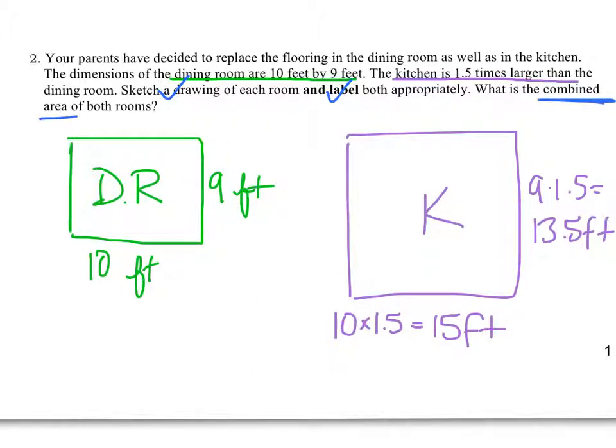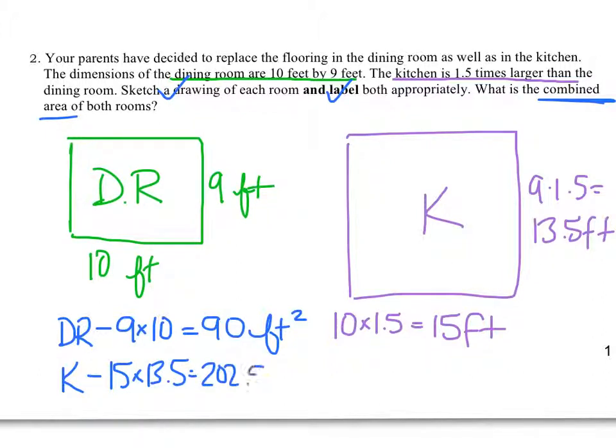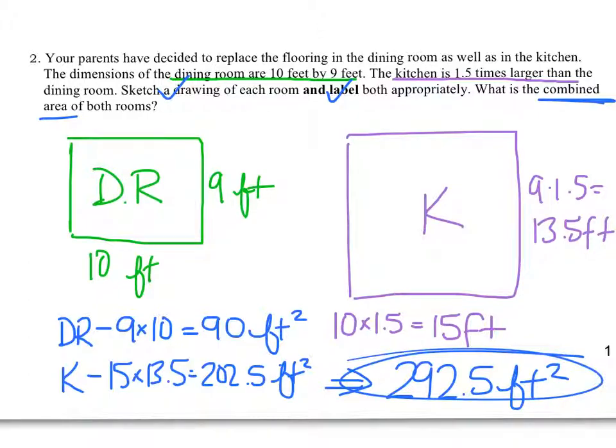What's the combined area? Well, let's find the area. The dining room has an area of 9 by 10 or 90 feet squared. The kitchen has an area of 15 times 13.5, which is 202.5 feet squared. And our grand total, when we find the combined area, is 292.5 feet squared.